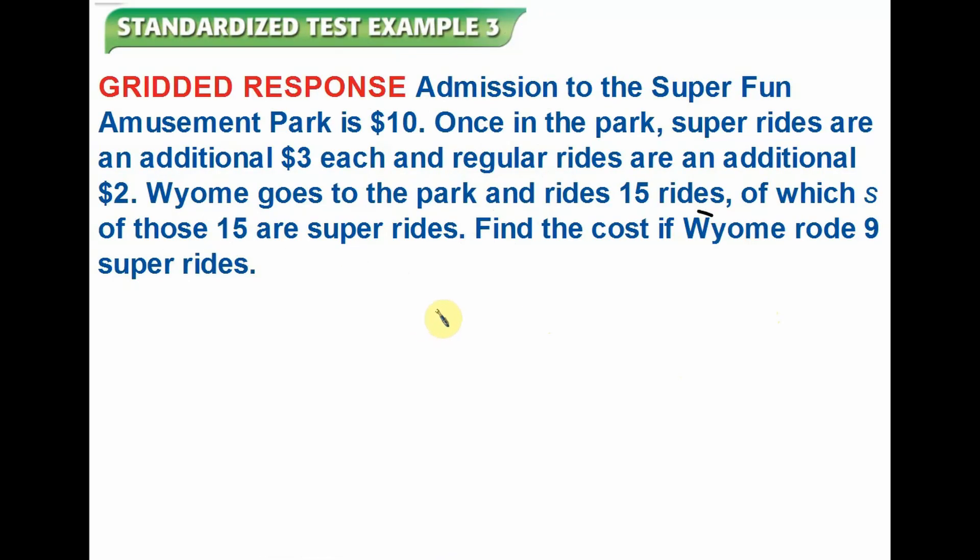Here is a standardized test example 3. Admission to the Super Fun Amusement Park is $10. Once in the park, super rides are an additional $3 each, and regular rides are an additional $2. Wyoming goes to the park and rides 15 rides, of which S of the rides, 15 are super rides. Find the cost if Wyoming rode 9 super rides.